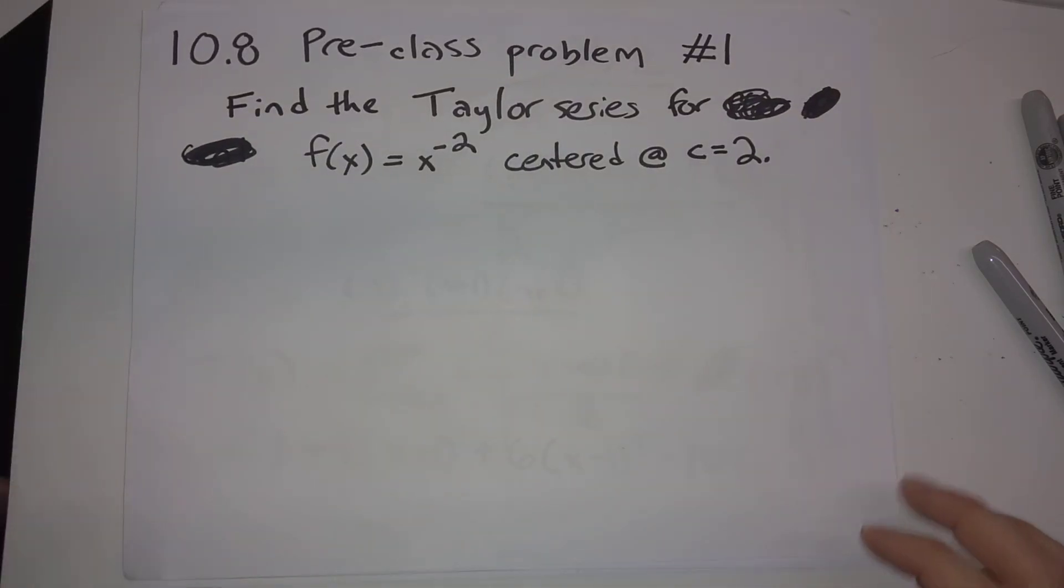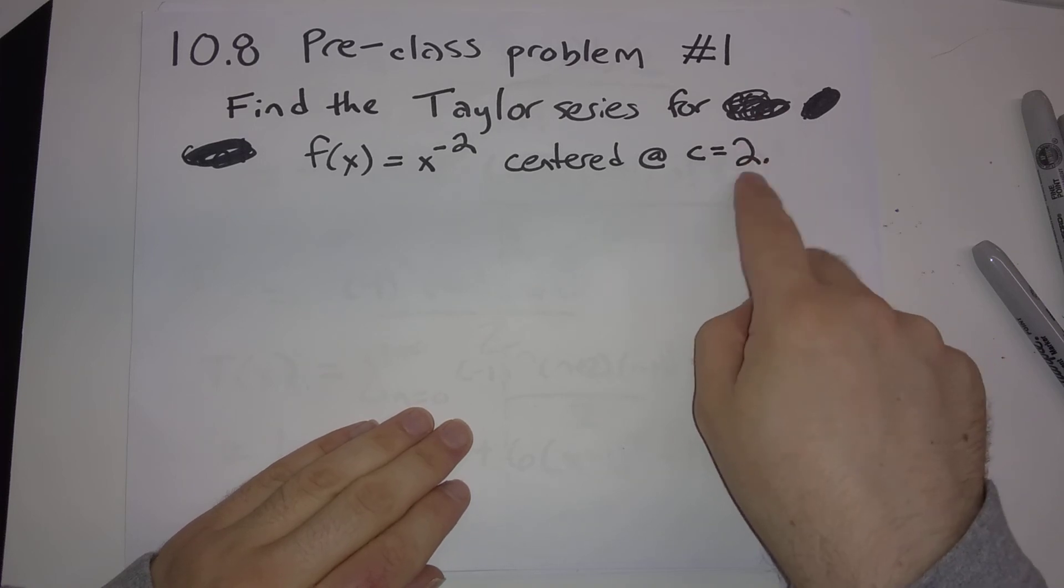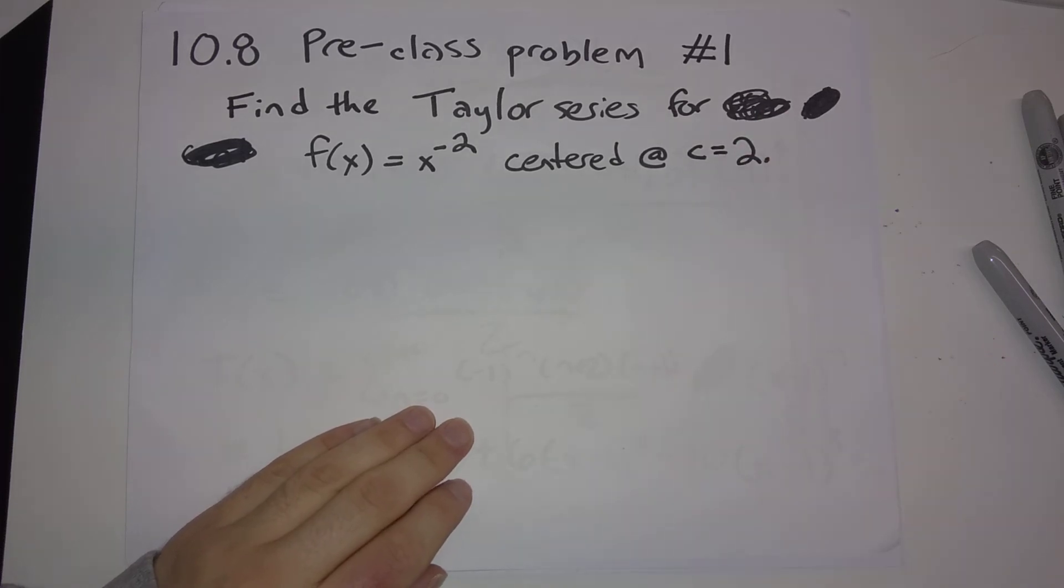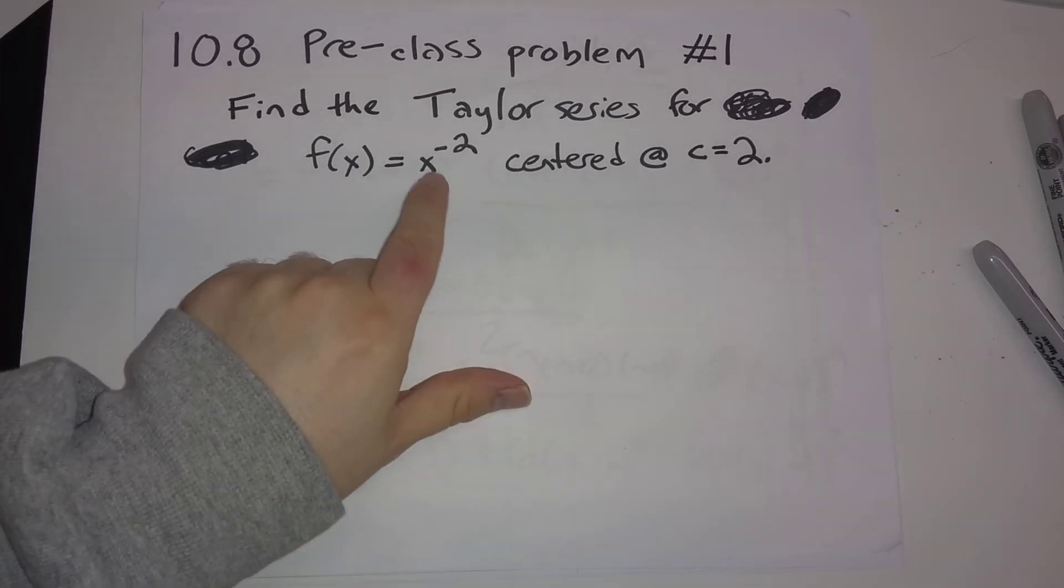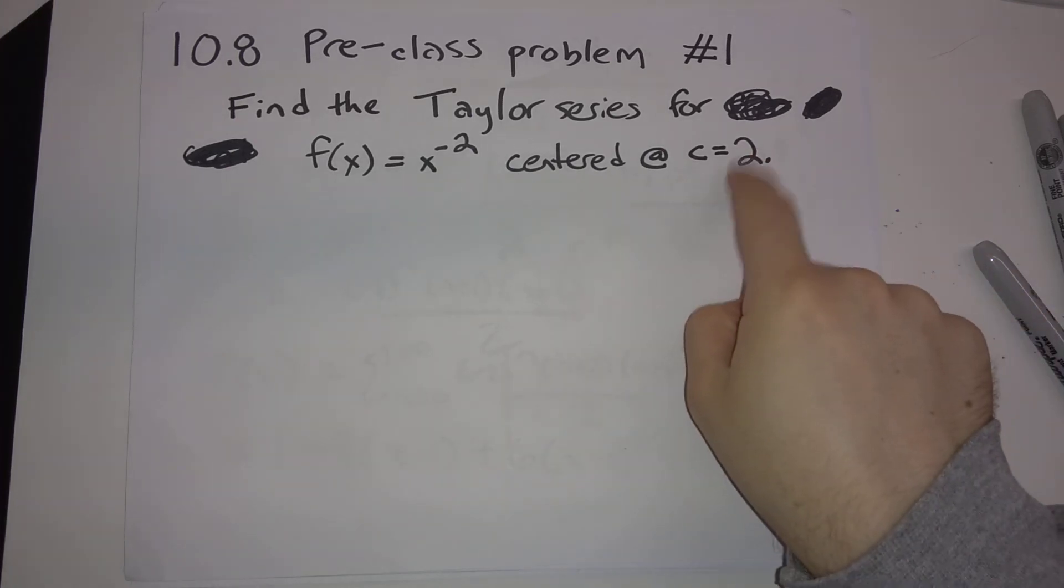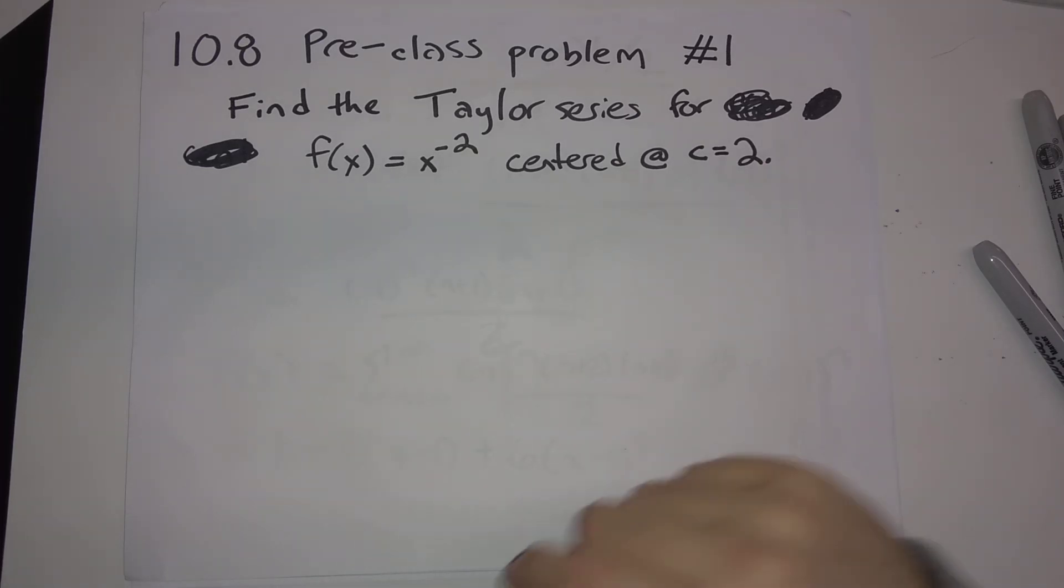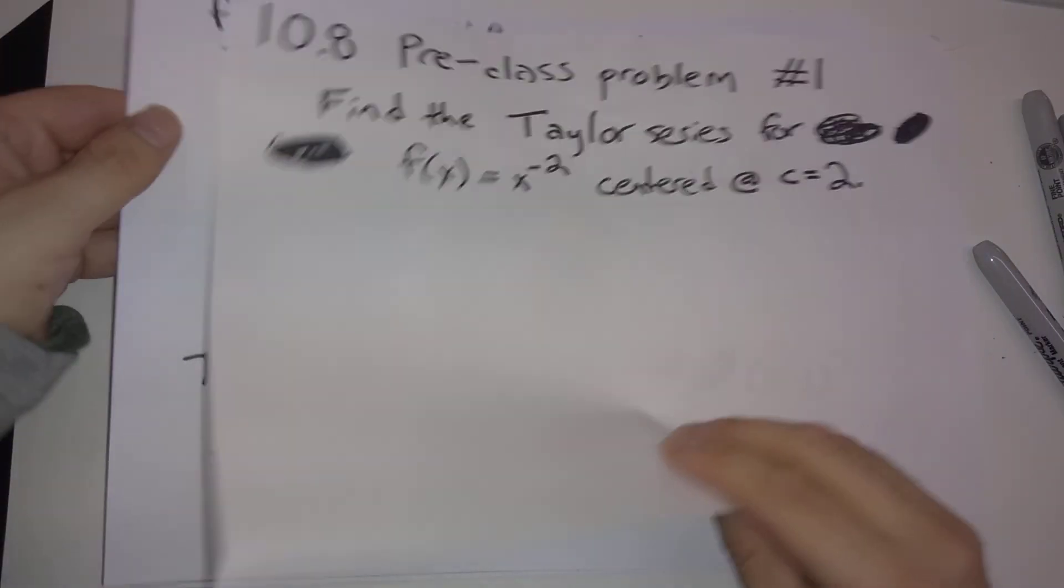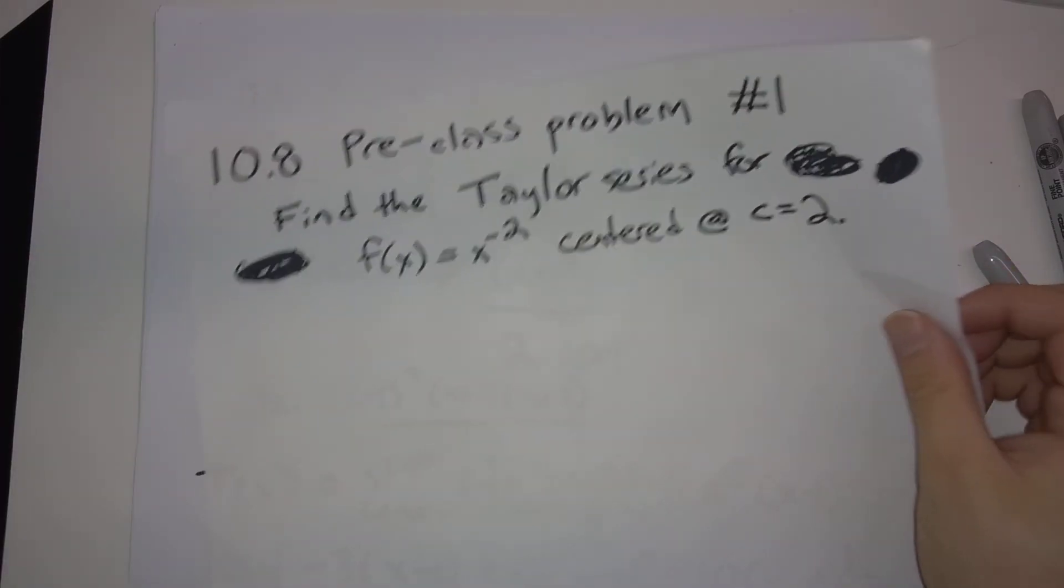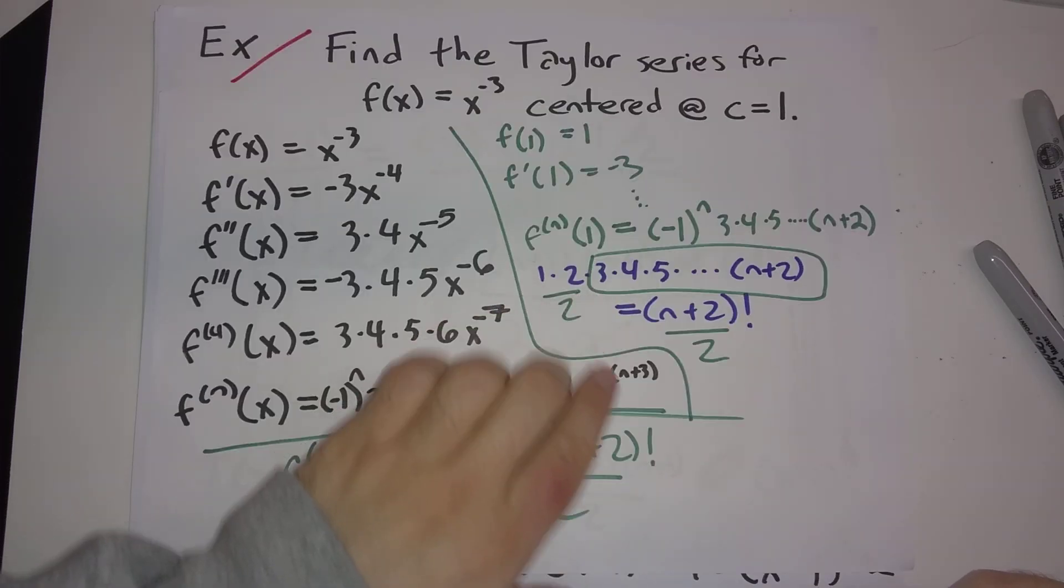So, let's end with a pre-class problem. Please find the Taylor series for f of x is x to the minus 2 centered at c is equal to 2. So, now you should have, this is x to the minus 2 instead of x to the minus 3. So the pattern for derivatives should be just a little bit simpler, but you'll have to account for two rates of different powers because, when we plugged in 1 here, we just got times 1. You mean times 1, so that went away.